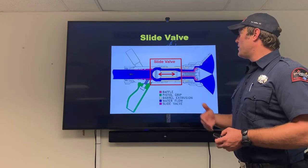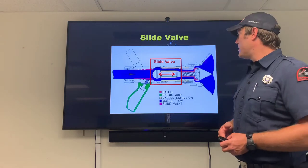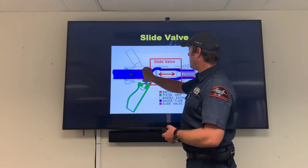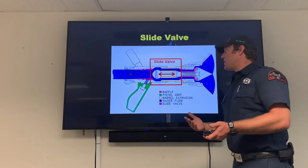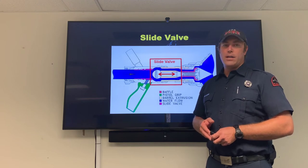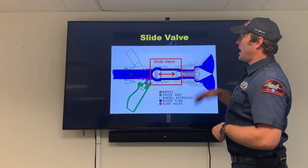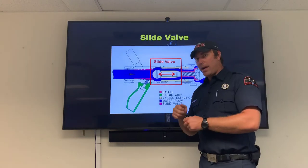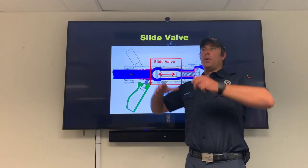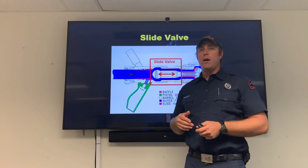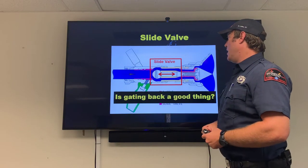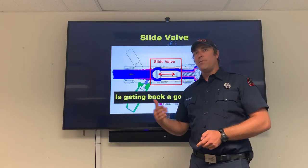Inside these nozzles we have a slide valve — a TFT patent — that allows gating back very effectively. Instead of a ball valve which creates turbulence, a seat slides forward and back opening and closing the nozzle. It's hard to gate back a smoothbore effectively. With the slide valve we can gate back just a little bit, still in a straight stream, and get water exactly where we want it. If I'm fighting a dumpster fire holding the nozzle above my head, it's nice to have that control so the nozzle doesn't kick back excessively.